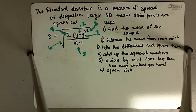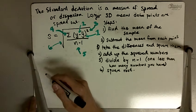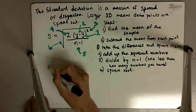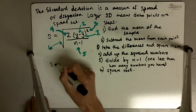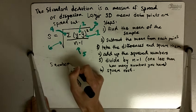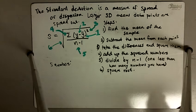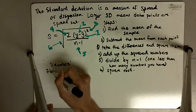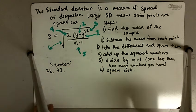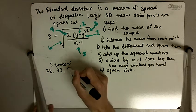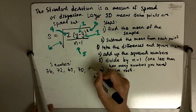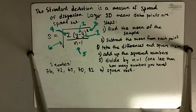So let's try this with a set of numbers. Let's say we have five numbers. And the numbers we're going to choose are 76, 72, 65, 70, and 82.